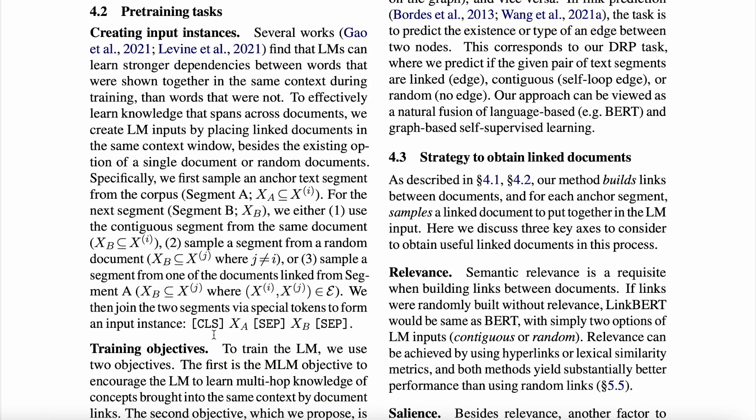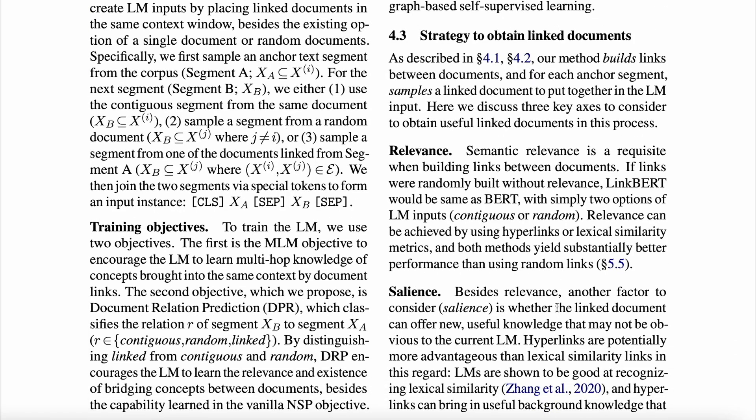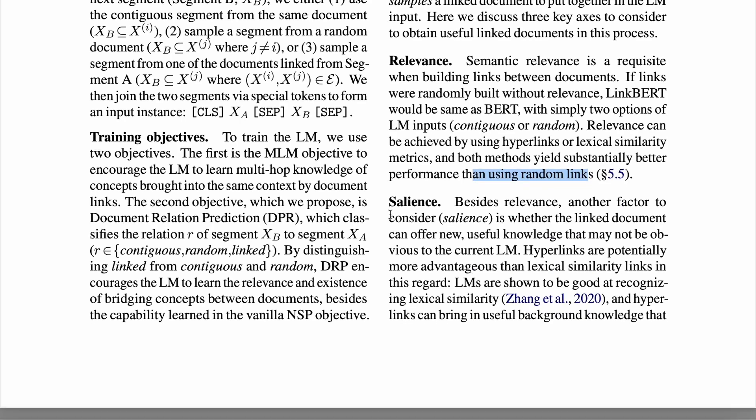Now talking about the notion or the strategy to how do you obtain these linked documents or what should be your thought process when you're trying to get these documents linked. The first is relevance, where the idea is the document that you're trying to link to the original document or the anchor document has to be relevant to it in the first place. Now you already get it if you crawl the web using hyperlinks, but if you want, you can also build it using lexical similarity. They found both the methods to work better than just using some random links.